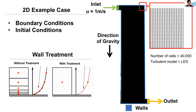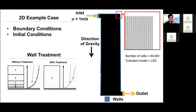There are certain criteria that need to be met for wall treatment — the distance between the cell and the wall has to be within a certain limit. Next, we will discuss boundary conditions and initial conditions. Boundary conditions are very important as they control the solution and input conditions. For this example of fluid flow, the boundary conditions are the inlet at the top, the outlet, and gravity. This is a 2D condition with 40,000 cells and the LES turbulence model.